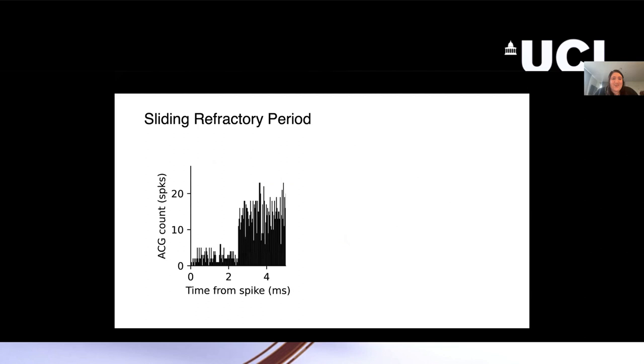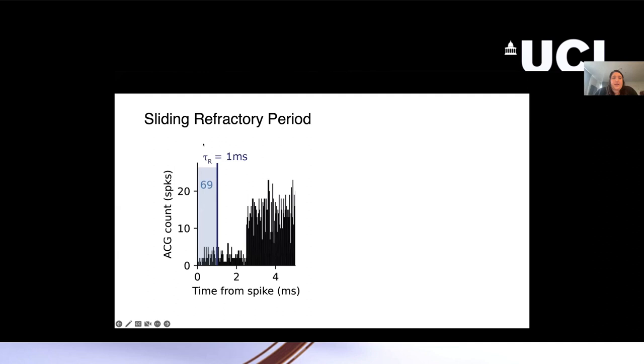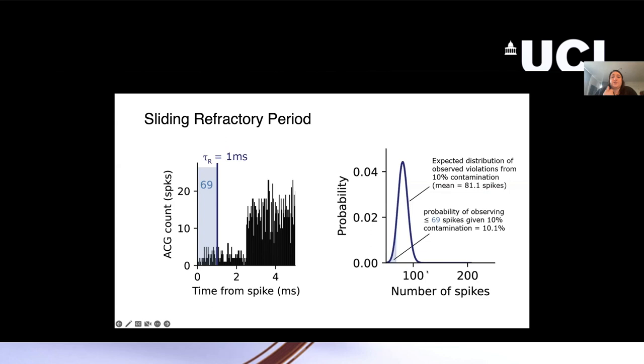I'm going to super quickly walk through the algorithm here. Basically, we look at the autocorrelogram of a neuron. This is just an example neuron. I'm only showing the right side of it. That's why it's not symmetric here. We pick a time point here. I'm using a time point of one millisecond, and we just count up the spikes until that point. Then we can look at the expected distribution of observed violations given a contamination level. Meaning, if I say we want less than 10% contamination, what is the distribution of number of spikes that I expect to observe under that condition? That's this dark blue line here.